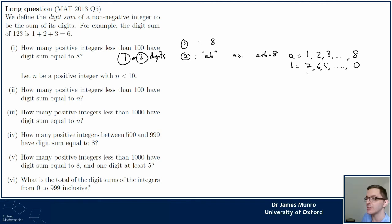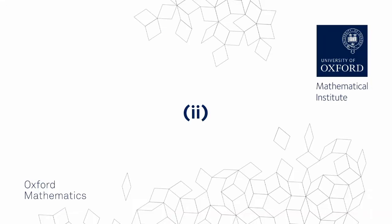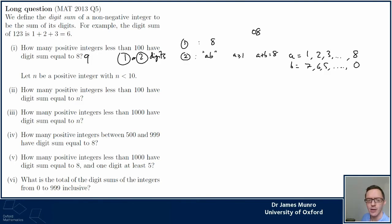So there are eight two-digit options and one one-digit option, giving a total of nine positive integers less than 100 with digit sum equal to 8. Maybe I didn't need to split into cases — I could have thought of the number 8 as '08'. Part two is a little different because it asks about digit sum equal to n, where n is some number less than 10, so we're looking for an answer in terms of n.